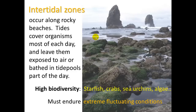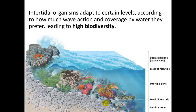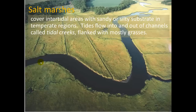Intertidal zones occur along rocky beaches. Tides cover organisms most of each day and leave them exposed to air or bathed in tide pools part of the day, creating very high biodiversity — starfish, crabs, sea urchins, sea anemones, algae. They must endure extreme fluctuating conditions. Intertidal organisms adapt to certain levels according to how much wave action and water coverage they prefer, leading to high biodiversity. Lower sub-zones are covered by water more often, while higher ones are more prone to splash, requiring good adhesion to rocks — like mussels.